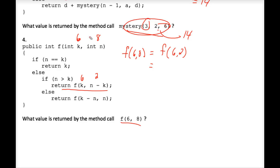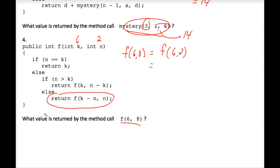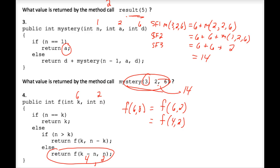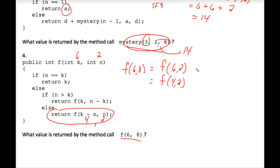Stack frame number two: what's f of six, two? Six plugs in for k, two for the second parameter. Are they equal? No. Is n greater than k? No — two is not greater than six. So we hit the return statement this time: f of k minus n, comma, n. k minus n is four and n is two. So all of this simplifies to f of four, comma, two. Notice there's no accumulating addition like in earlier exercises.